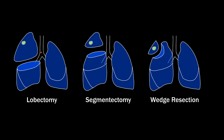First, some quick definitions. A lobectomy is when an entire lobe is removed — in this case, the entire right upper lobe. A segmentectomy is when a segment of a lobe is removed — in this case, the apical segment. Both are considered anatomic resections, which means the surgeon dissects back to the hilum to clip the origin of the lobar bronchus or the origin of the segmental bronchus.